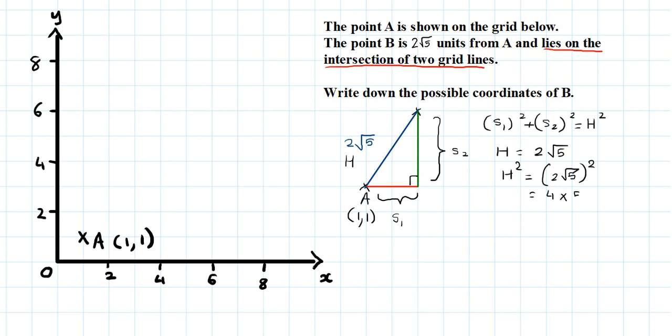So I'm looking for 2 positive square numbers because I'm going to have to square S1 as well as S2 to get 20. So I'm going to write a list of square numbers. And I've got 1 squared is 1, 2 squared is 4, 3 squared is 9, 4 squared is 16, 5 squared is 25.